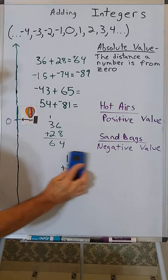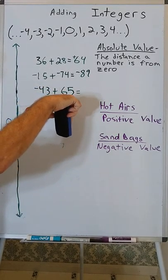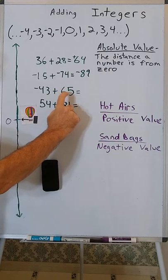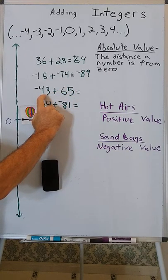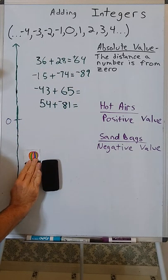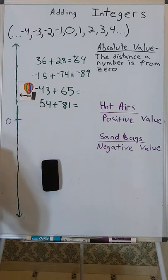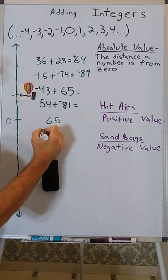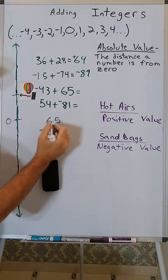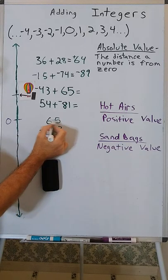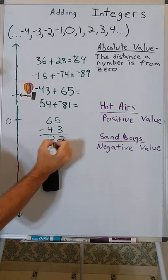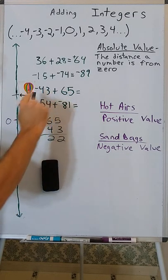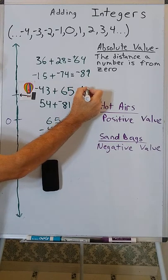In this case, we are putting sandbags together with hot airs. The sandbags make the balloon go down and the hot airs make it go up, and it's going to go up more than it goes down, so it ends up positive. It goes down 43 and up 65, ending above zero. We subtract the absolute values, putting the number further from zero on top, and the balloon ends up positive 22.